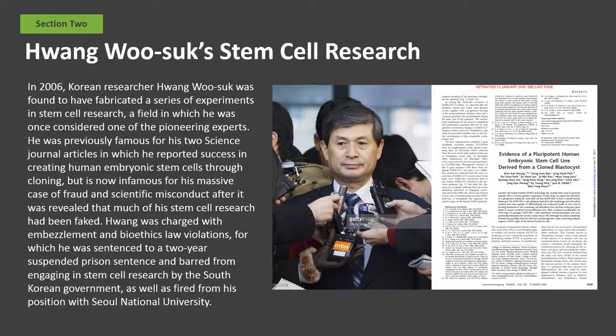In 2006, Korean researcher Hwang Woo-suk was found to have fabricated a series of experiments in stem cell research, a field in which he was once considered one of the pioneering experts. He was previously famous for his two science journal articles in which he reported success in creating human embryonic stem cells through cloning, but is now infamous for his massive case of fraud and scientific misconduct after it was revealed that much of his stem cell research had been faked.